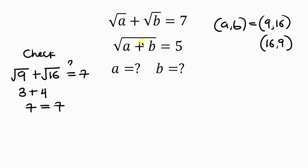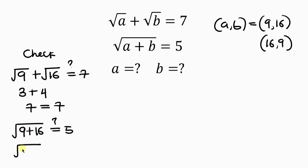If you want to check further, plug the values into equation 2. The square root of A plus B, which is 9 plus 16 equals the square root of 25. The square root of 25 is 5, which is also equal to the right-hand side. So our values are very much correct.